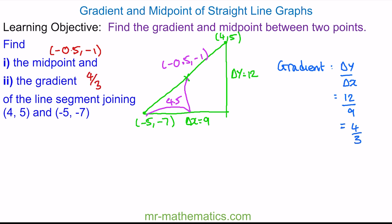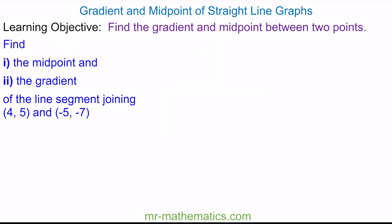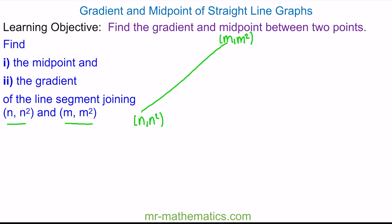In the next question, we can find the midpoint and the gradient between two general points. We've been given the coordinates (n, n²) and (m, m²). We'll sketch the two points as a line segment. We can work out the change in x as the difference between the two x values, so m minus n, and the change in y as the difference between the two y values, so m² minus n².